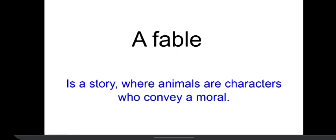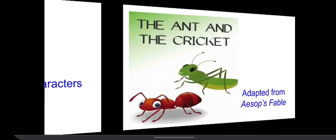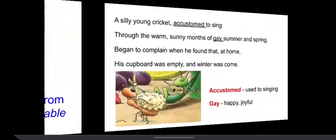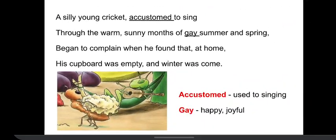So I guess you know what a fable is. Now let's move on to the poem. The Ant and the Cricket is particularly an adapted version of Aesop's fable. Adapted means it has been changed — there have been modifications and alterations in it. So let's move forward to the very first stanza.